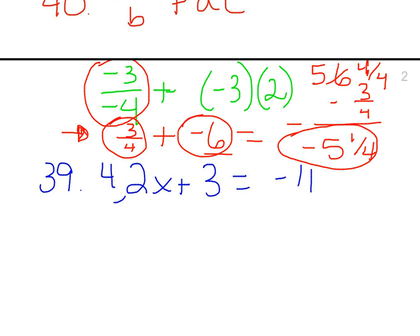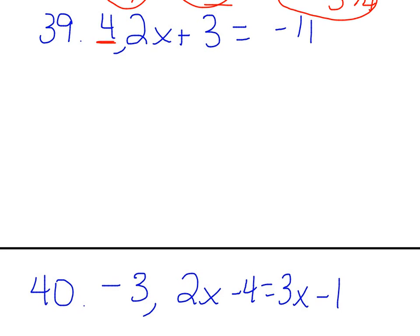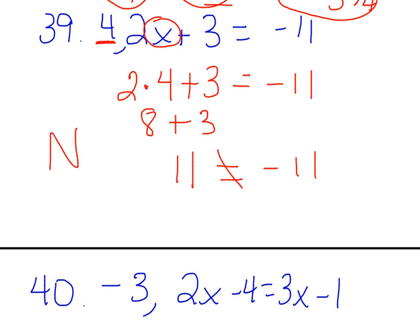Looking at number 39, the second 39, we are supposed to see if this given number, the 4 right here, is a solution to the equation. If it's a solution, then it'll be a true value for x. So we're going to plug the 4 in for the x, and so we'd have 2 times 4 plus 3 equals negative 11. Well, 2 times 4 is 8, and 8 plus 3 is 11. So we end up with the statement 11 equals negative 11. Since that is not true, our answer to this one is no. I think most of you got that one right.